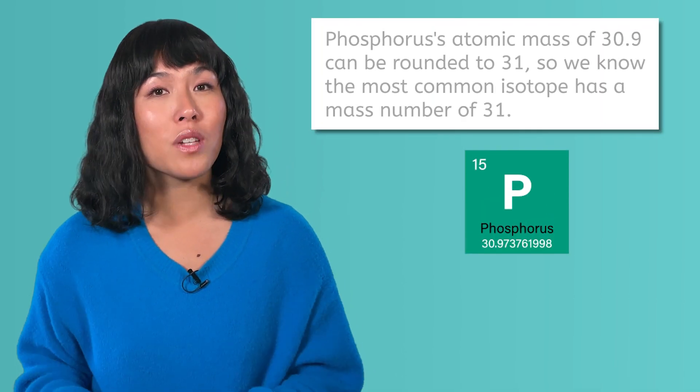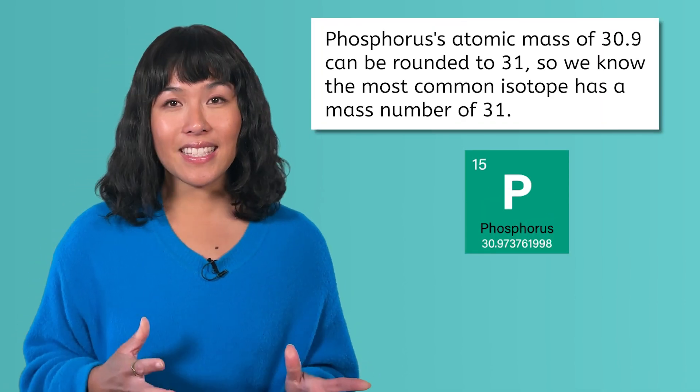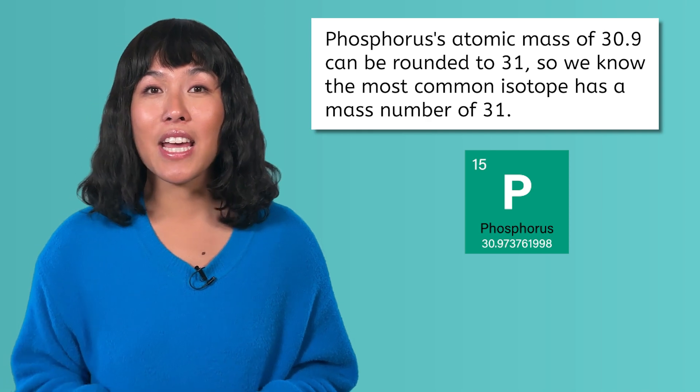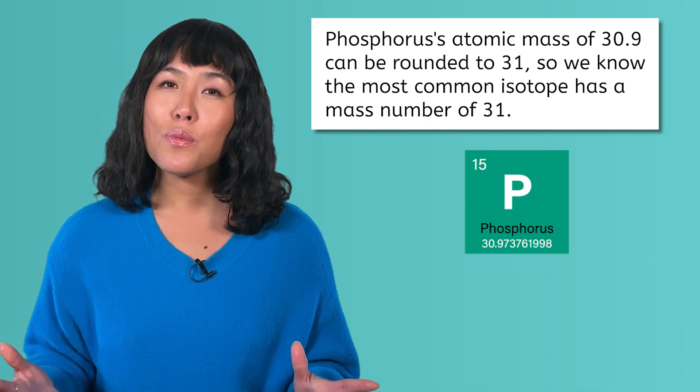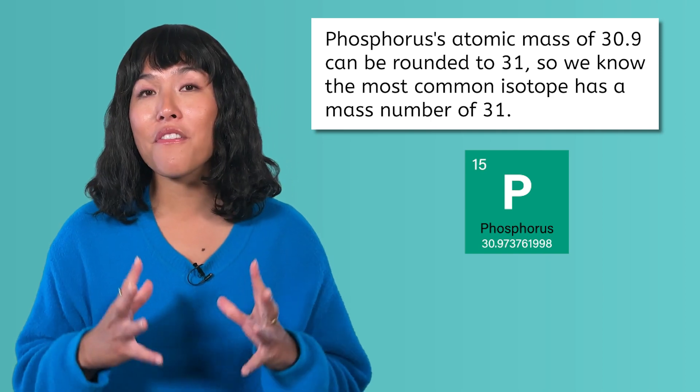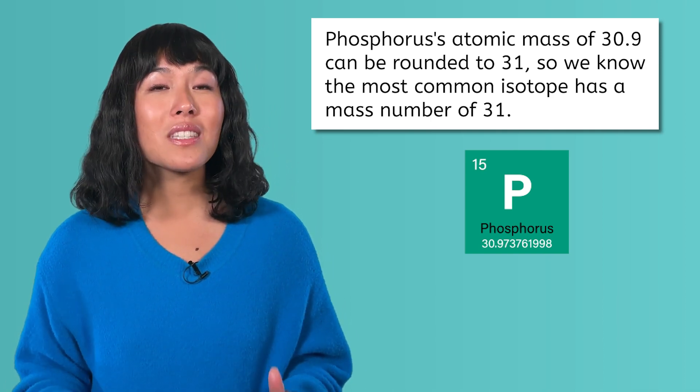There is another number in the box, the atomic mass. If we want to know the most common isotope of phosphorus, we can round the atomic mass to the nearest whole number. In this case, 30.9 amu rounds to 31 amu. We can assume that the most common isotope of phosphorus is phosphorus 31.